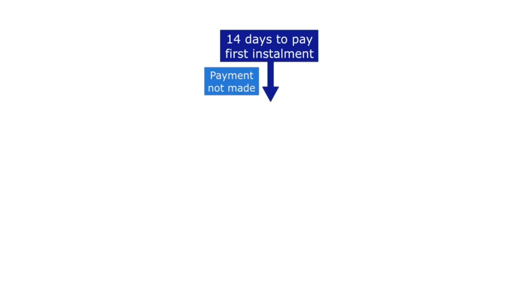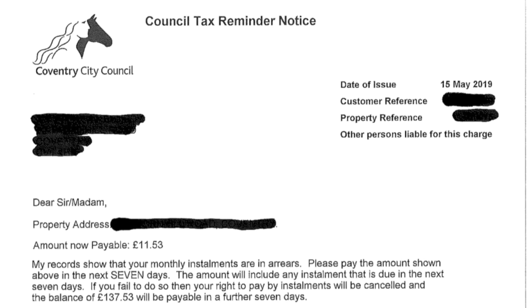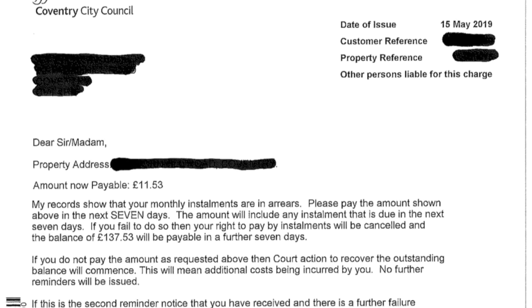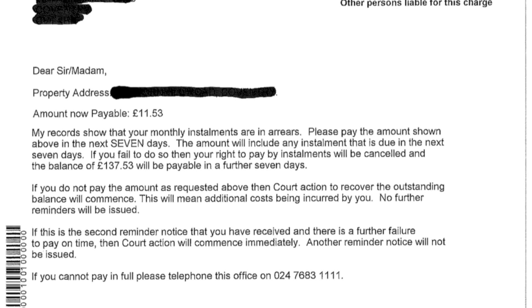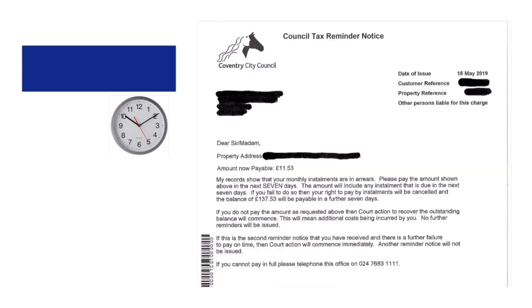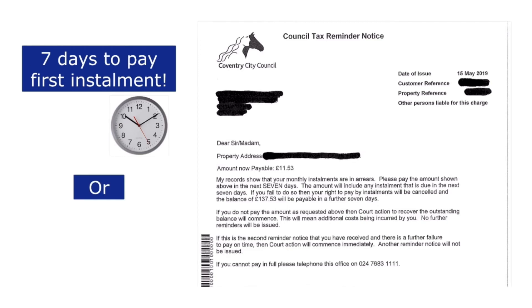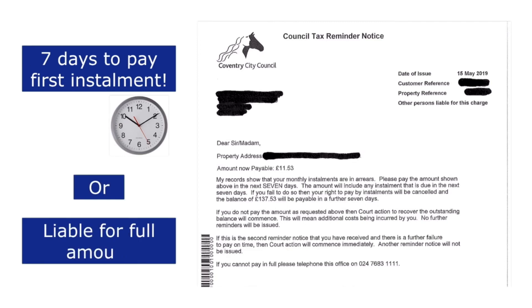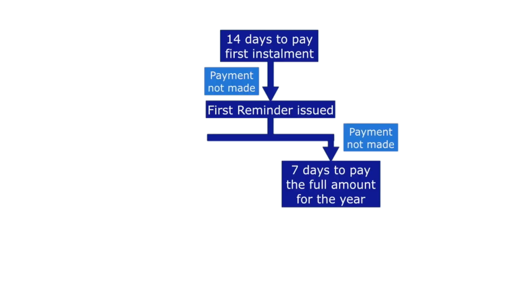You will initially be given 14 days to pay your first instalment. If you do not do so, the council will issue the first reminder notice. A reminder notice is issued when an instalment is not paid on the date specified on the council tax bill. You will be given 7 days after receiving the letter to make the payment. If you fail to pay again you will become liable for the full amount of council tax for that year, which you must pay within 7 days. If, however, you do pay the instalment, no further action will be taken.